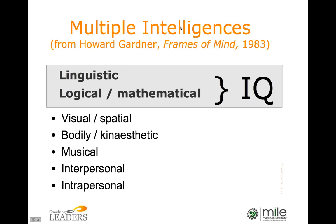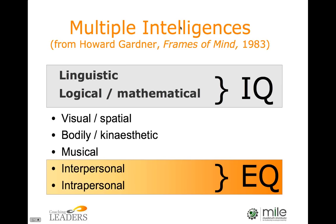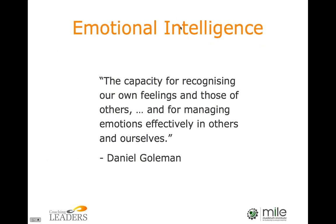Interpersonal intelligence is about understanding, relating to, and influencing other people. Intrapersonal intelligence is about being aware of, making sense of, and managing your own emotions. These last two intelligences make up what has been called EQ — emotional quotient, or emotional intelligence. Daniel Goleman published the best-selling book 'Emotional Intelligence' in 1996. Before that, emotional intelligence had been a fairly obscure term in academic psychology, worked on by researchers like John Mayer, Peter Salovey, and Reuven Bar-On.